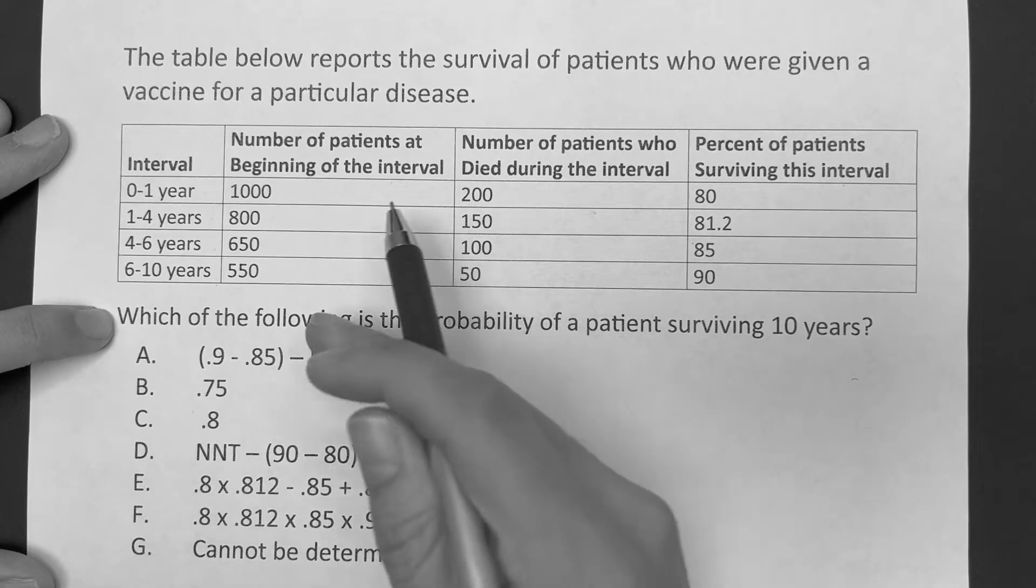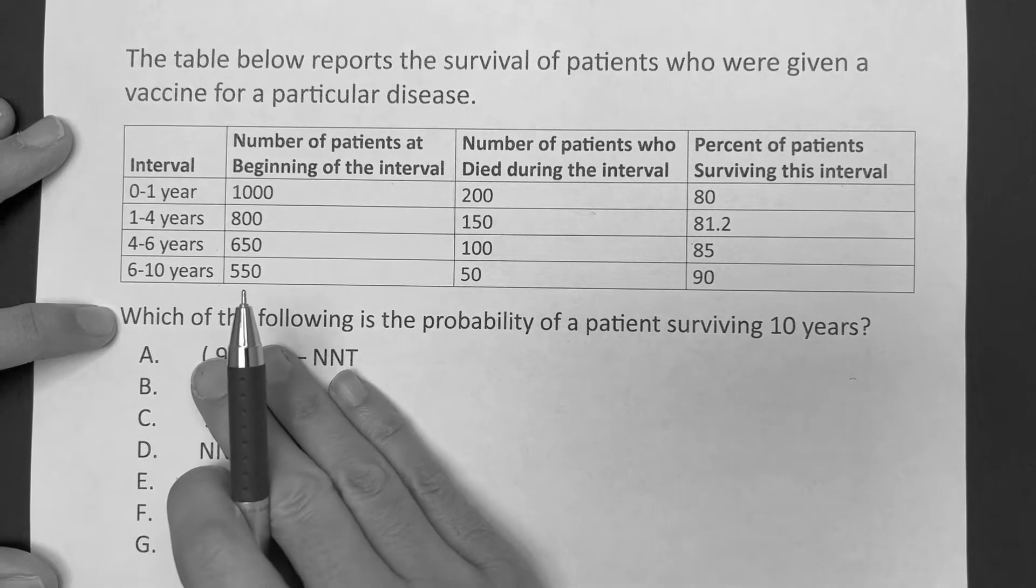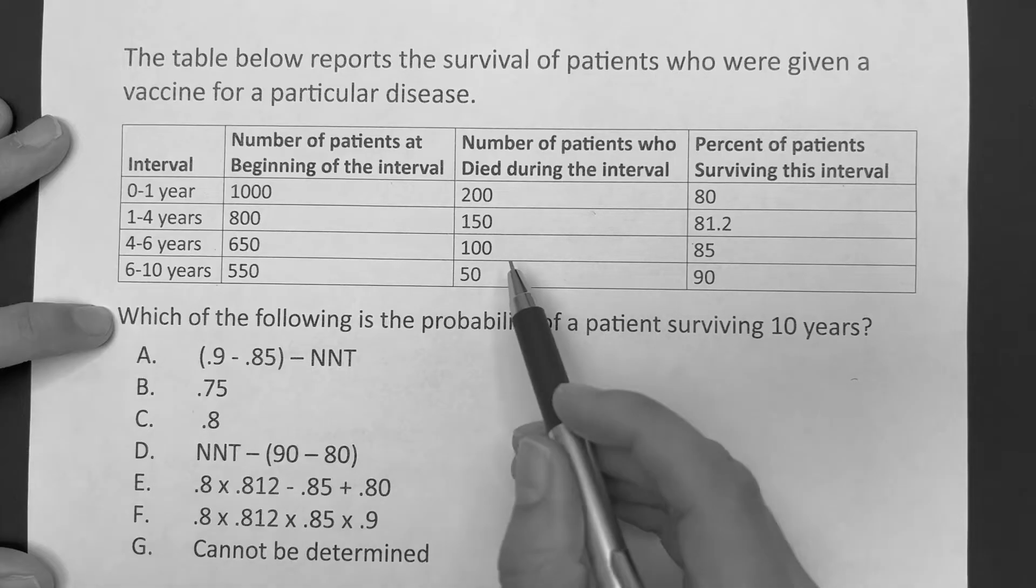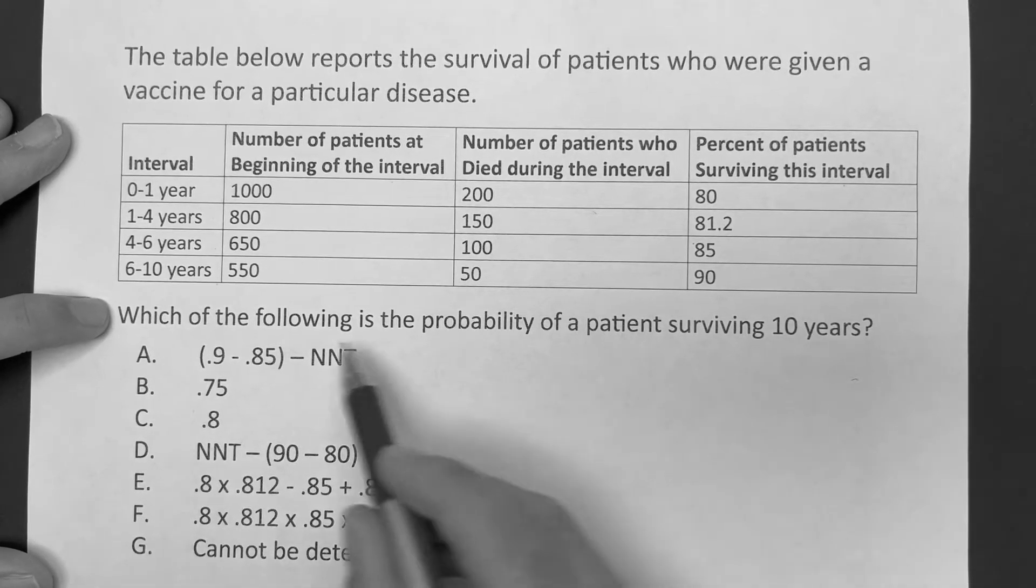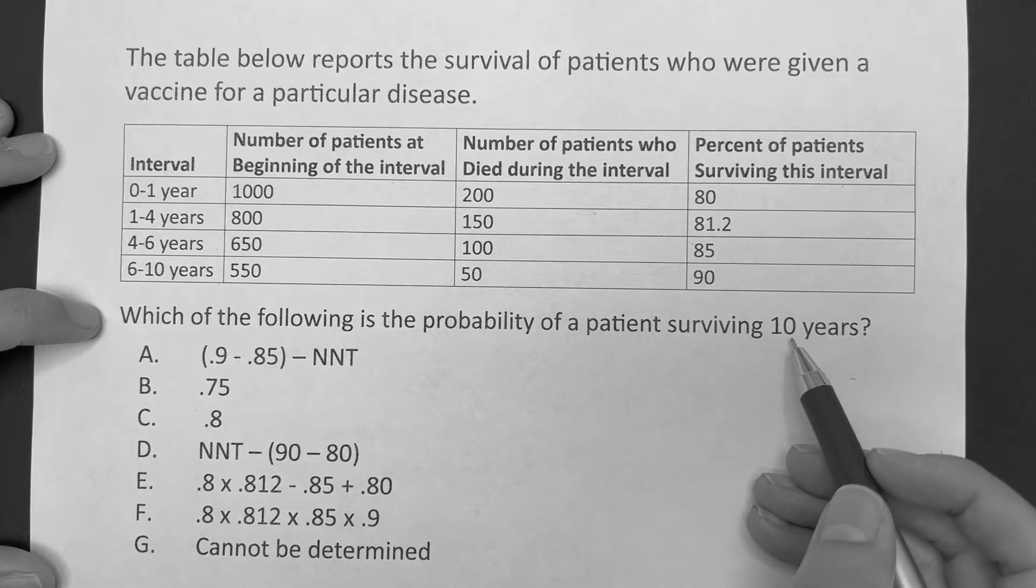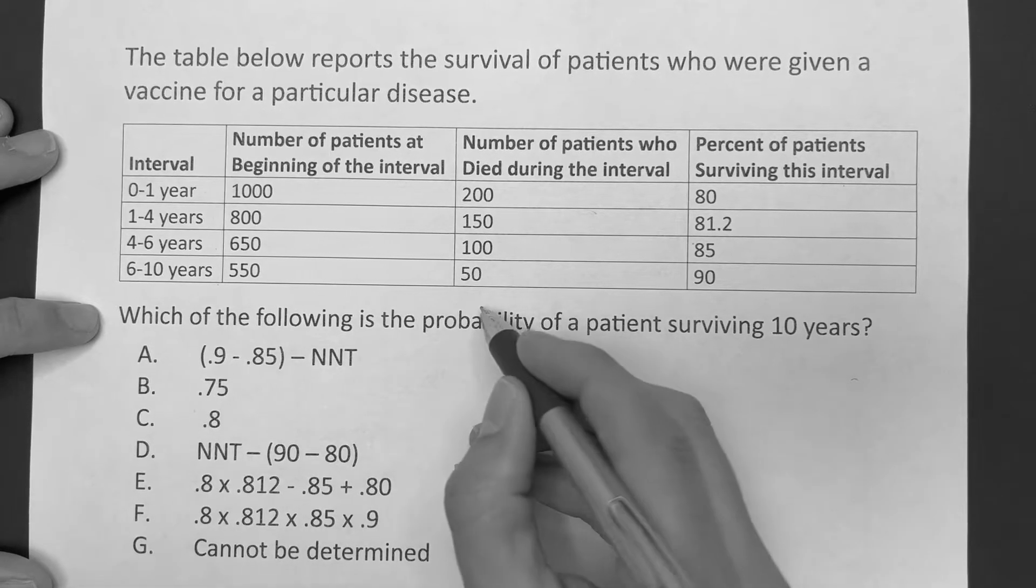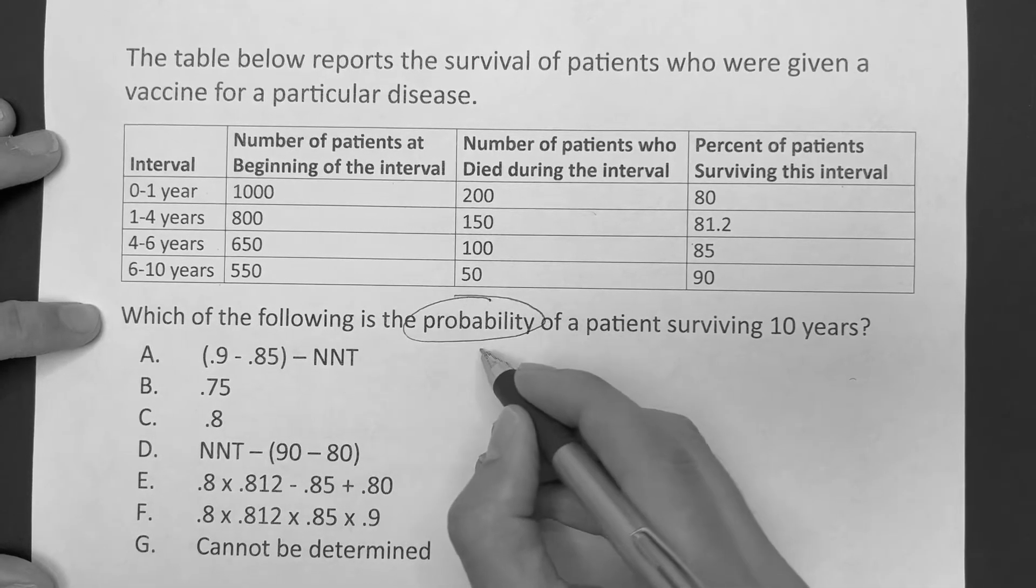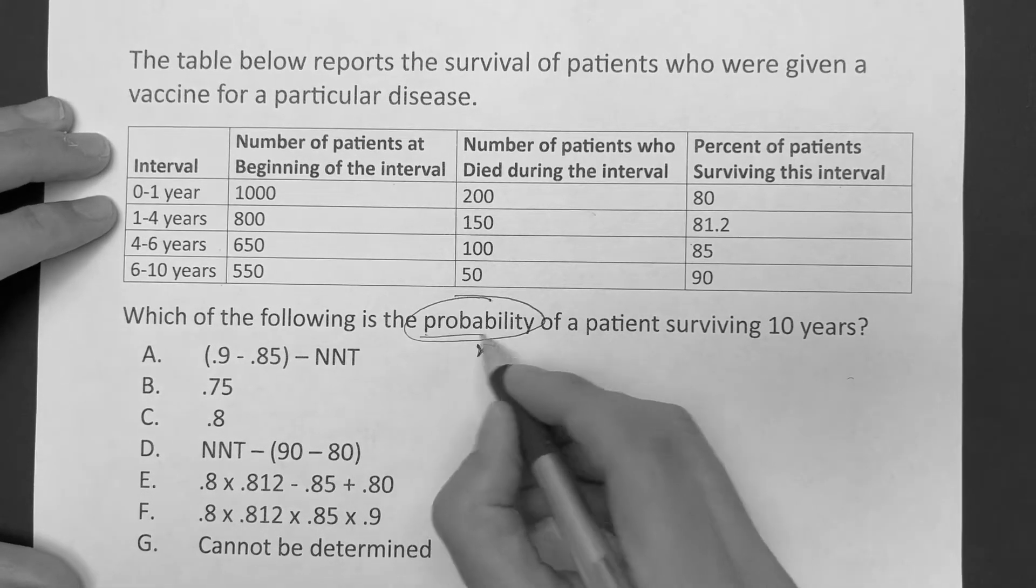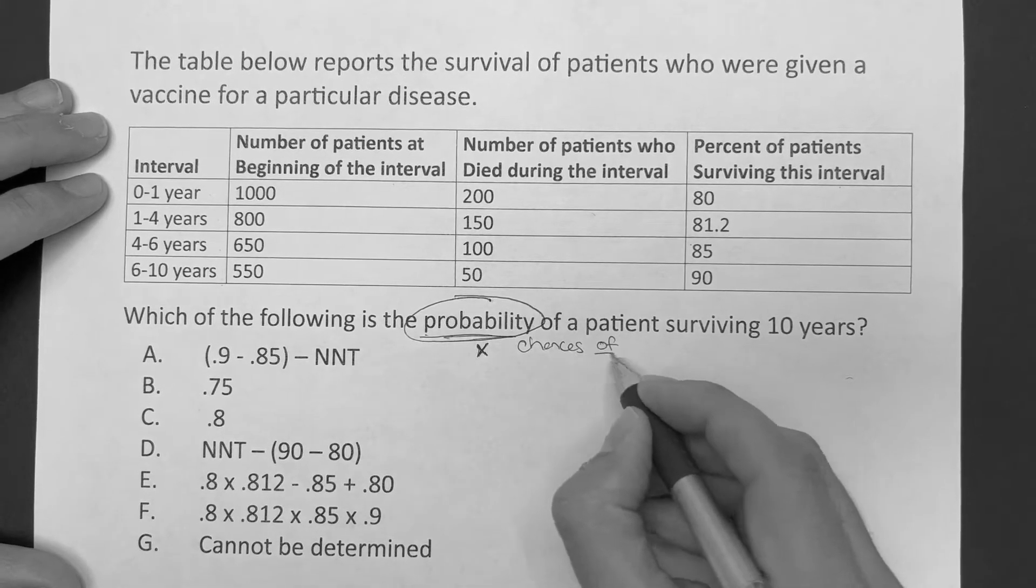When I look at this question, it says which of the following is the probability of a patient surviving 10 years? I had the luxury of teaching mathematics to elementary school kids and high school kids. When I see probability, I know my answer is going to be something with multiplication. We're going to multiply because probability essentially means what are the chances of.